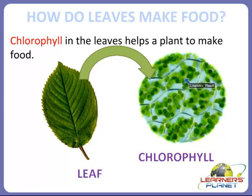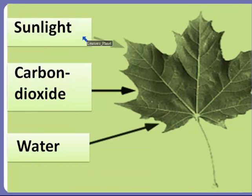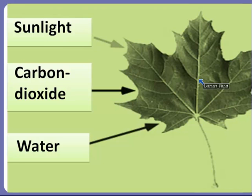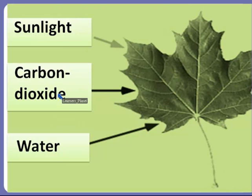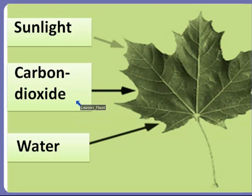There are many small structures or substances which help a plant to make food. There are other things also which are very important for the plant to make their own food. To make food, a leaf also needs water, sunlight, and carbon dioxide. This picture shows that a leaf needs sunlight, carbon dioxide, and water to make its own food.